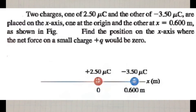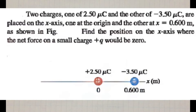Two charges, one of 2.5 microcoulombs and another of minus 3.5 microcoulombs, are placed on the x-axis — one at the origin and the other at x equals 0.6 meters, as shown in the figure. Find the position on the x-axis where the net force on a small charge q would be zero.